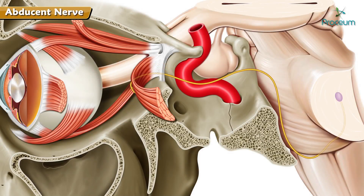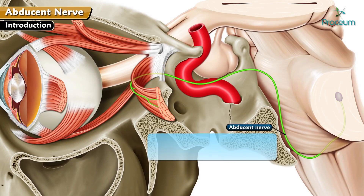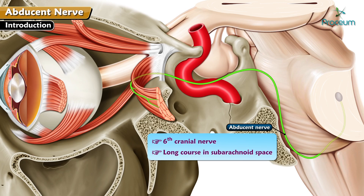Abducens, or the 6th cranial nerve. The abducens nerve is the 6th cranial nerve. It has a long course in the subarachnoid space.